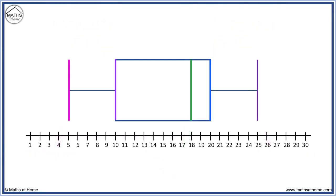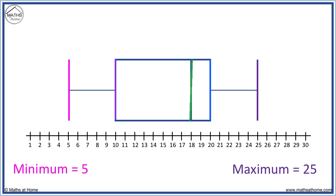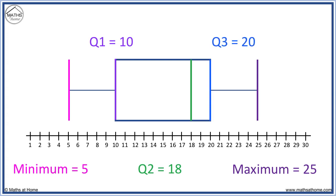Finally, the third quartile is the position of the line at the end of the box. For example, let's read the five-number summary: the minimum is 5, the maximum is 25, the median or Q2 is at 18, the first quartile is at 10, and the third quartile is at 20.